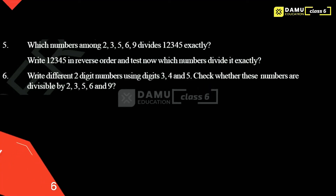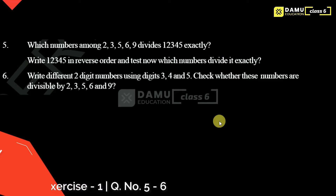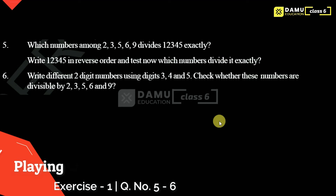Hello viewers, thanks for watching our videos. If you haven't subscribed, please subscribe and click the bell icon. In this module we're going to discuss which numbers among 2, 3, 5, 6, and 9 divide 12345 exactly. We'll also test in reverse order and check which numbers divide it exactly.